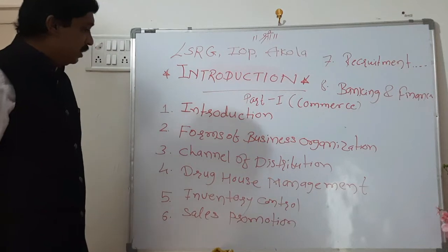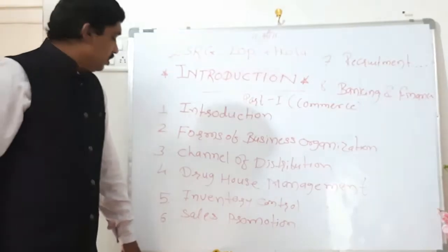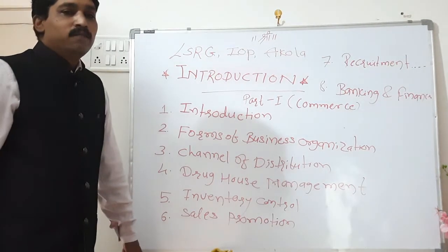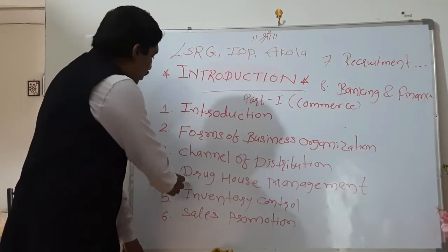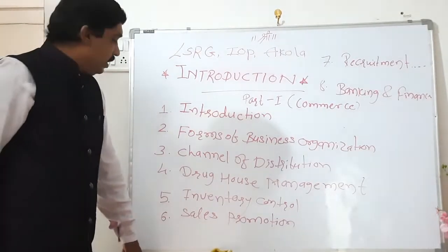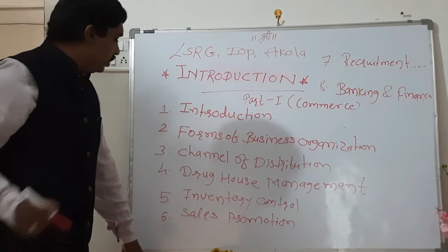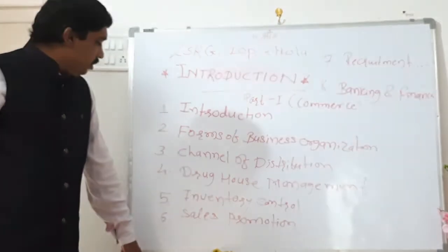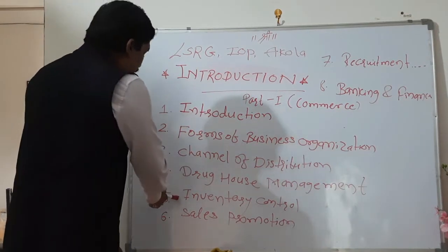After that you are going to study drug house management. Drug house management is the chapter where you learn how to manage your pharmacy. It covers details about how to get the license from the drug authority to run your pharmacy, what qualifications and documents are needed, and what furniture and equipment are required — so you will get familiar with everything needed to open your own pharmacy.